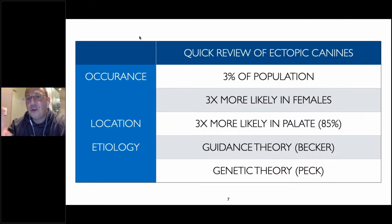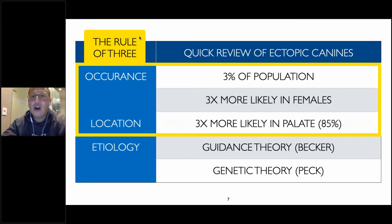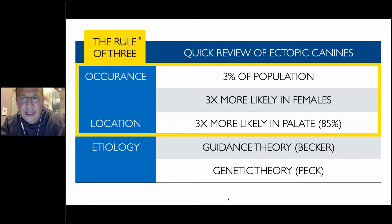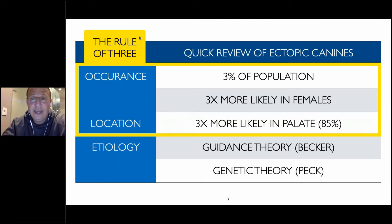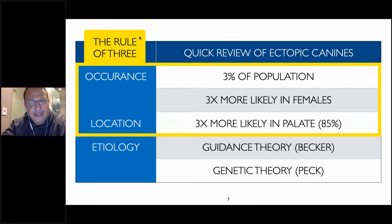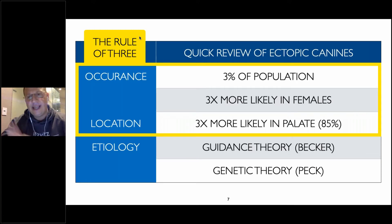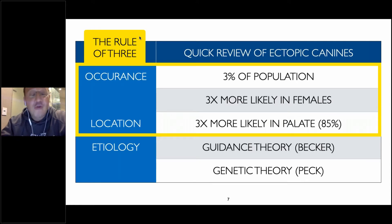Here's what I want you to remember regarding ectopic canines — remember what I like to call the rule of three. They occur in three percent of the population. They are three times more likely in women, and they are three times more likely — actually even more than three times more likely — on the palate. About 85 percent more likely on the palate. Palatally displaced canines are usually related to a genetic component, whereas labially displaced canines are more commonly associated with arch length insufficiency or crowding.